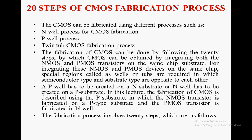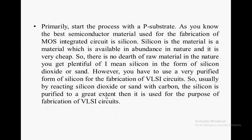A P-well has to be created on an N-substrate, or an N-well has to be created on a P-substrate. In this lecture, the fabrication of CMOS is described using the P-substrate, in which the NMOS transistor is fabricated on a P-type substrate and the PMOS transistor is fabricated in an N-well substrate. The fabrication process involves 20 steps, starting with a P-substrate.